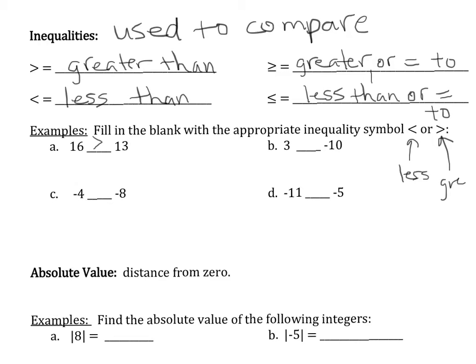For 3 and negative 10: 3 is further to the right on the number line than negative 10, so 3 is greater than negative 10. For negative 4 and negative 8: negative 4 is further to the right than negative 8, so this is also greater than. For negative 11 and negative 5: negative 11 is further to the left than negative 5, so we have a less than symbol. Whatever is to the right on the number line is the greater number.